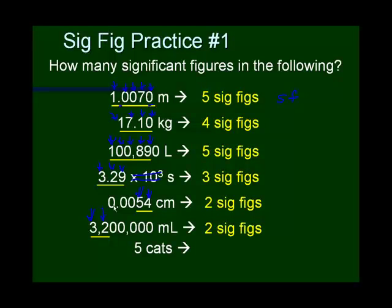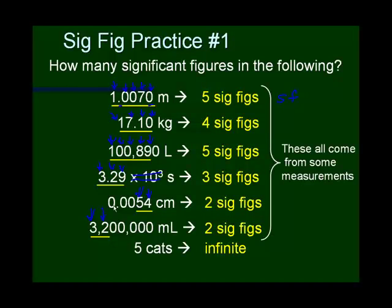Five cats — did that trick you? This one is considered infinite because it's a counted number. The other examples came from some sort of measurement, but five cats is a counted value, so it's considered infinite significant figures.